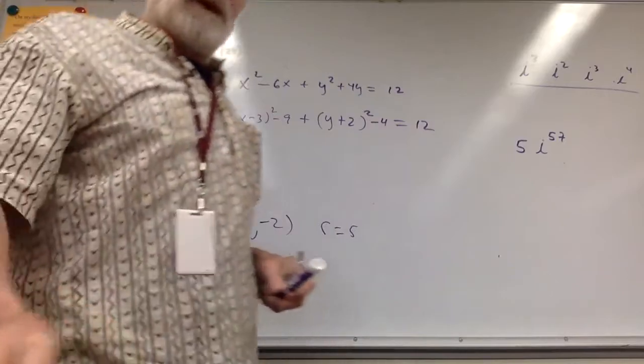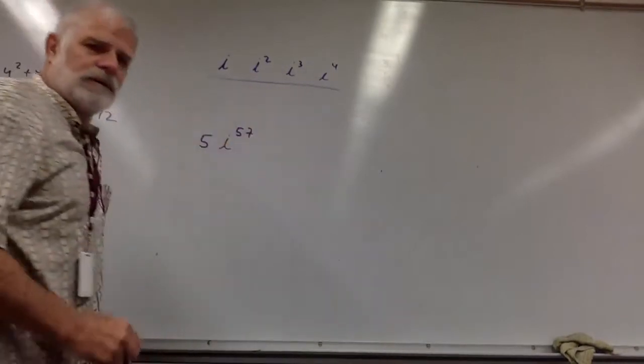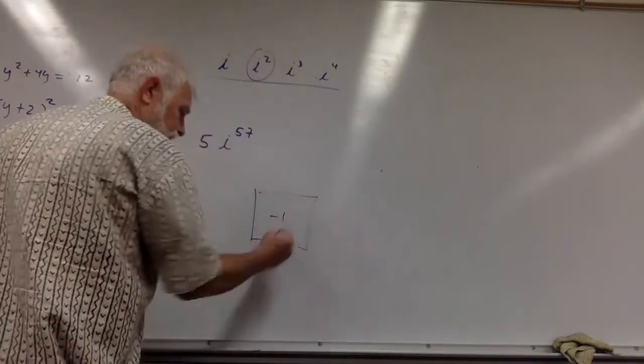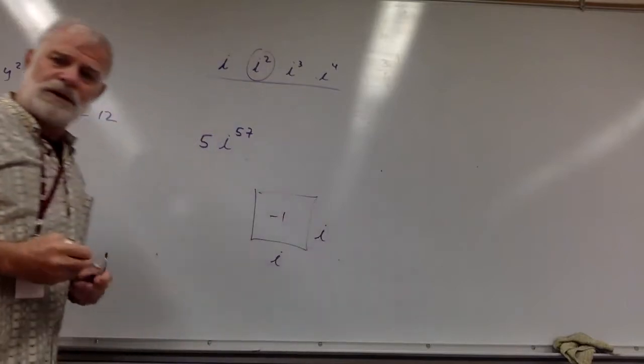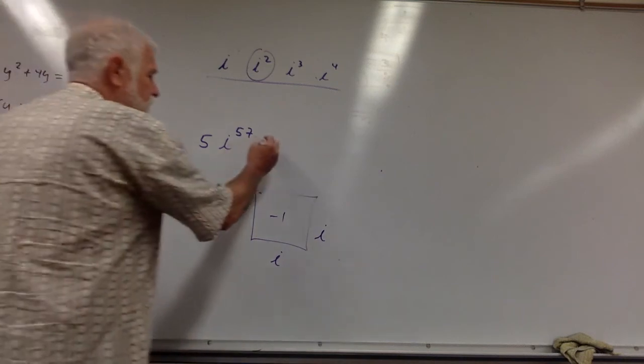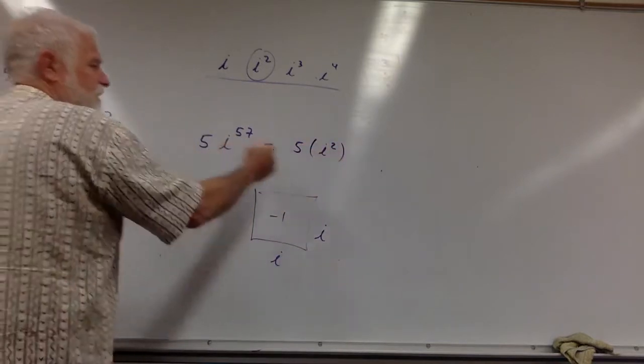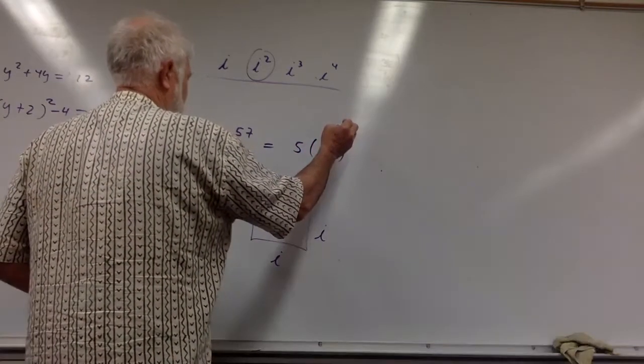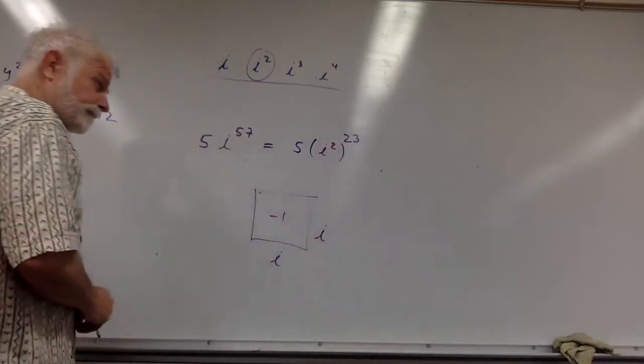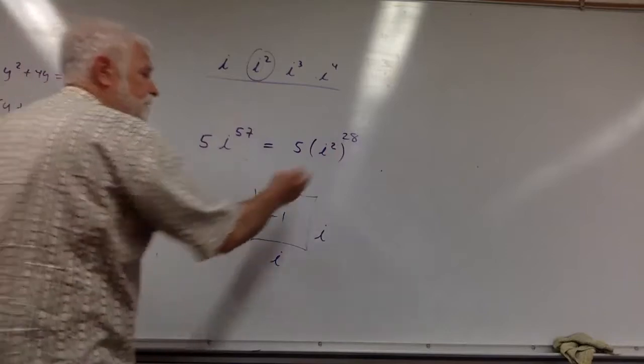5i to the 57th. I don't think any students really remember i, i², i³, i⁴ after a year or two. But if you can remember i² is -1, which is the most important thing—we want -1—so we make up a number that works. I think you can work with that in a richer way by always converting i⁵⁷ as i² to—2 goes into 57, 28 times. So there's, I'm up to 56, I need one more.